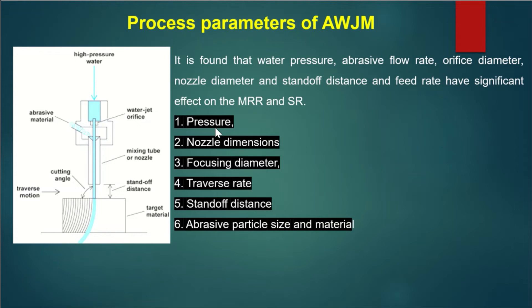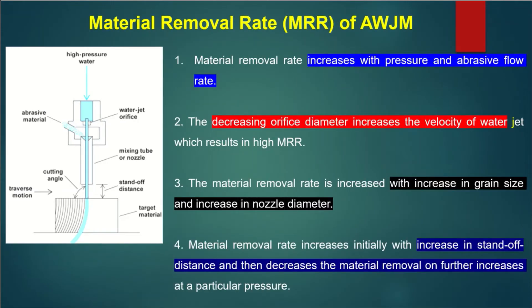You must have an idea about the process parameters of abrasive water jet machining: pressure, nozzle dimensions, focusing dimensions, diameter, traverse rate, standoff distance, abrasive particle size, and material. The material removal rate depends on these parameters — it increases with pressure and abrasive flow rate.